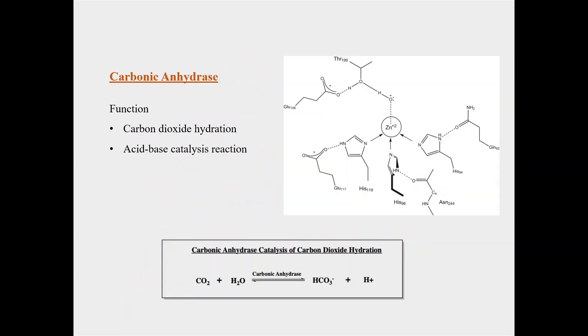The next metalloprotein which is given is carbonic anhydrase. So in carbonic anhydrase, the metal which is present is zinc in +2 oxidation state. It is coordinated to 3 nitrogen from 3 histidine residues and 1 OH or H2O. So the function of carbonic anhydrase is hydration of carbon dioxide. CO2 plus H2O in presence of carbonic anhydrase can give HCO3- and H+, and it can also do the reverse reaction that is from HCO3- plus H+, it can give CO2 and H2O back.